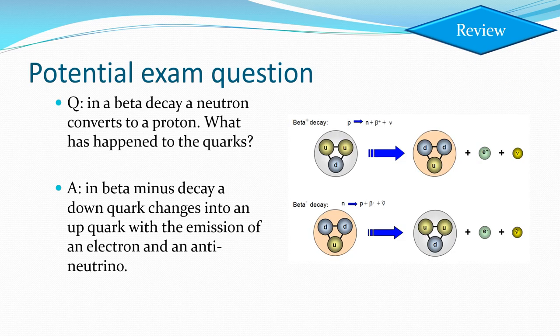Here's a nice little potential exam question. In beta decay, a neutron converts to a proton. Can you explain on a quark level what's going on there? And this is similar to those Feynman diagrams we talked about in the last section. Have a look at the little diagrams I've got here. Down quark changing into an up quark with the emission of an electron and an anti-neutrino. Can you sort of explain that yourself? Can you remember how to write out a paragraph to explain what's going on there? Make sure you can do that.